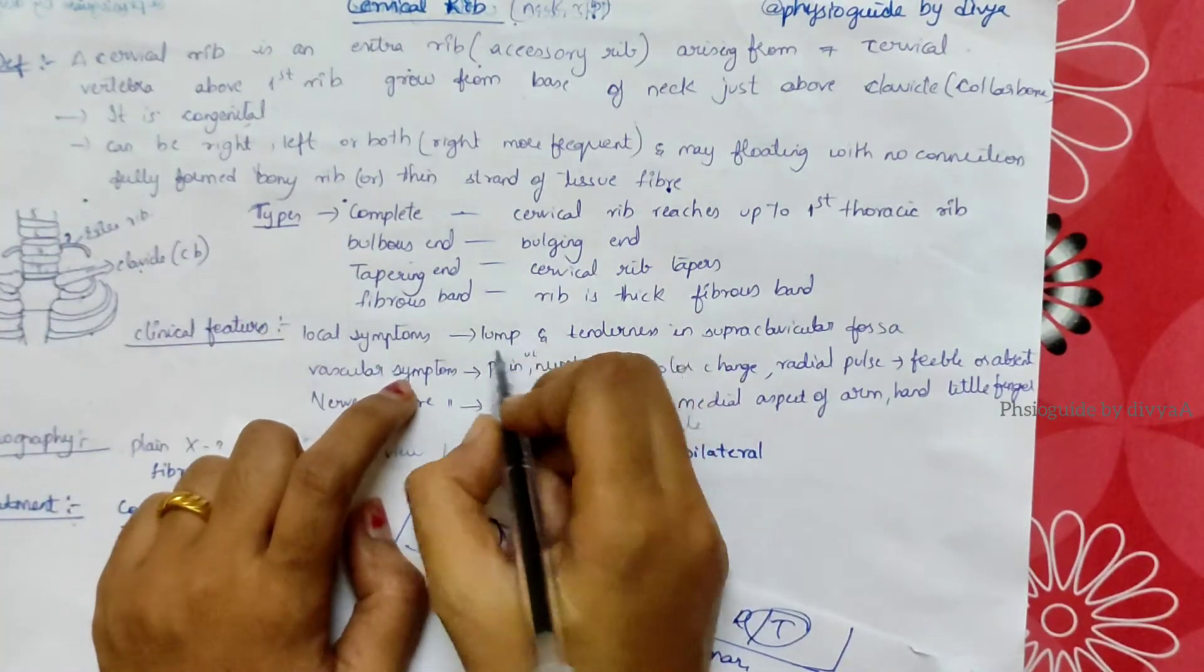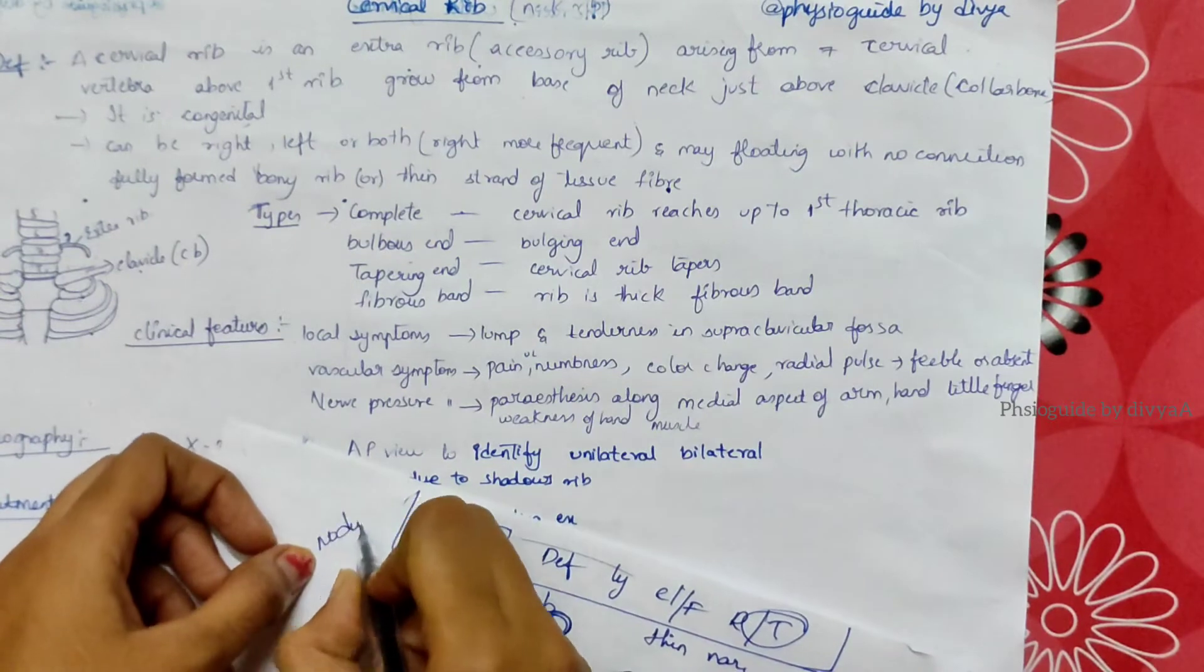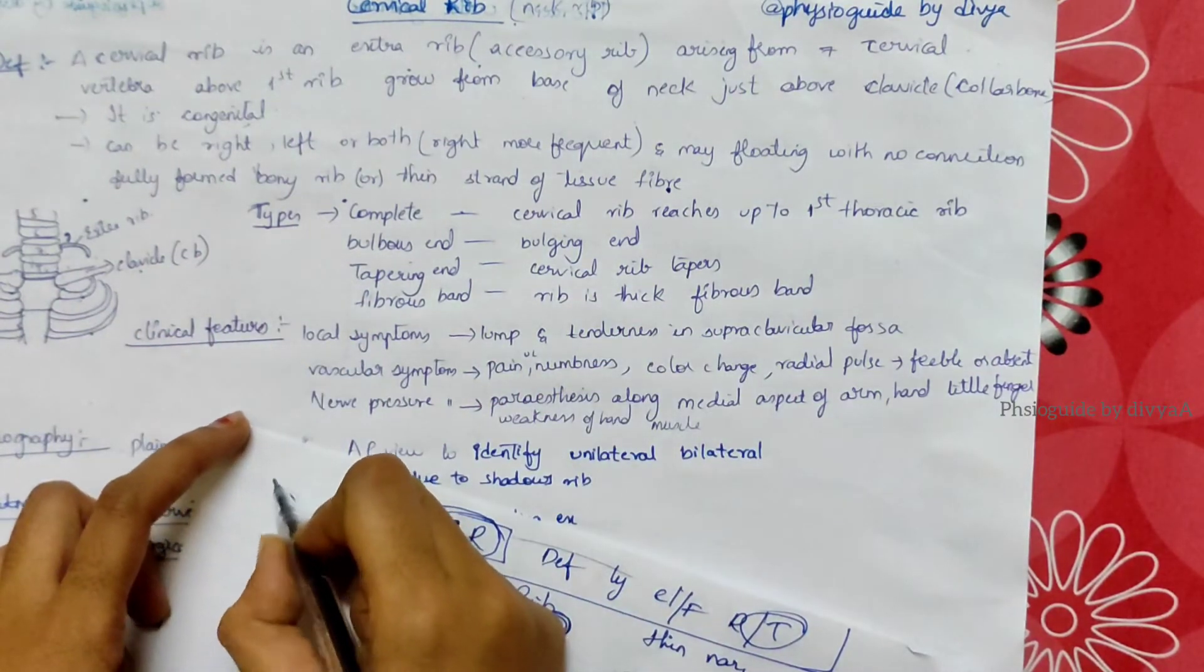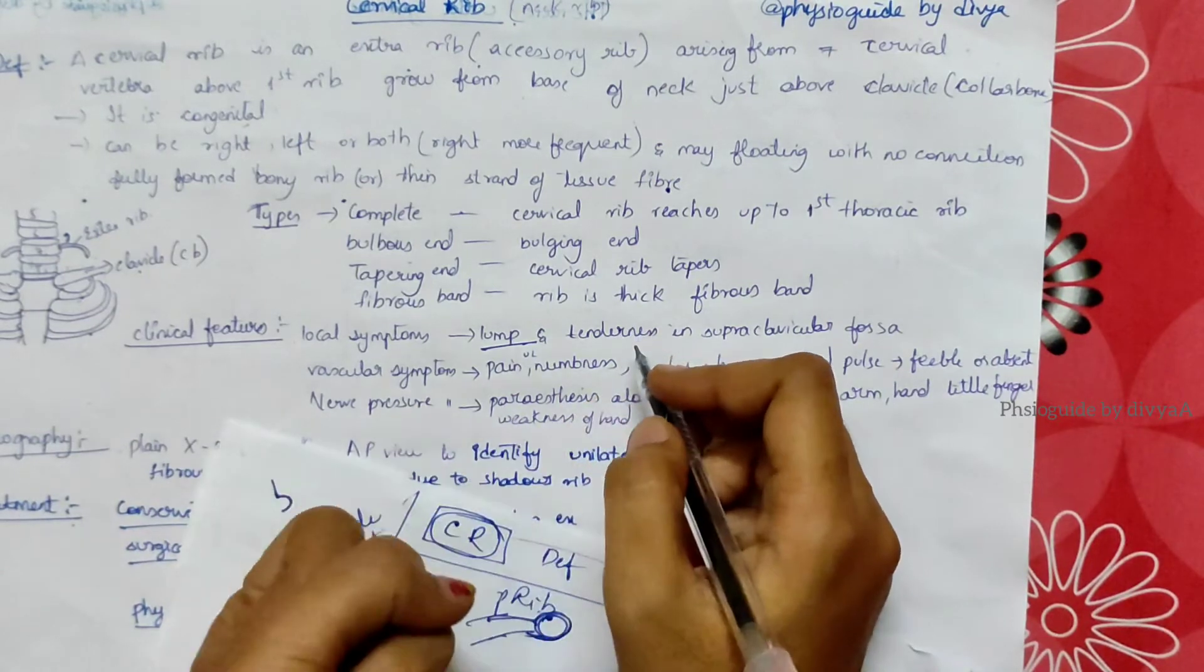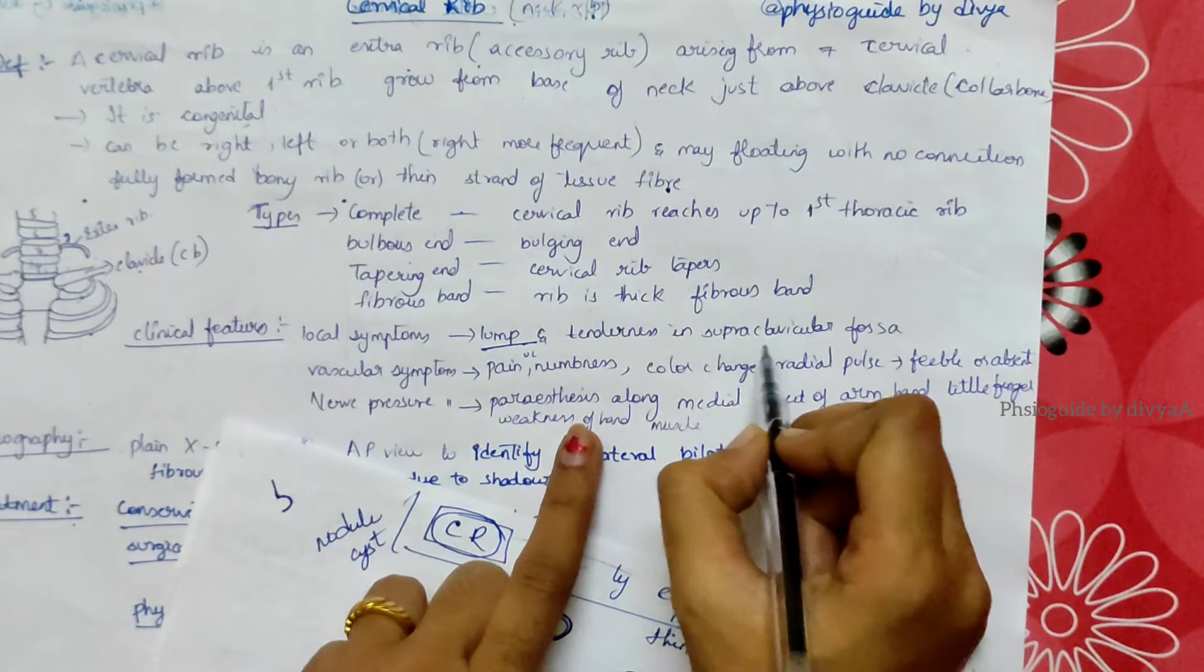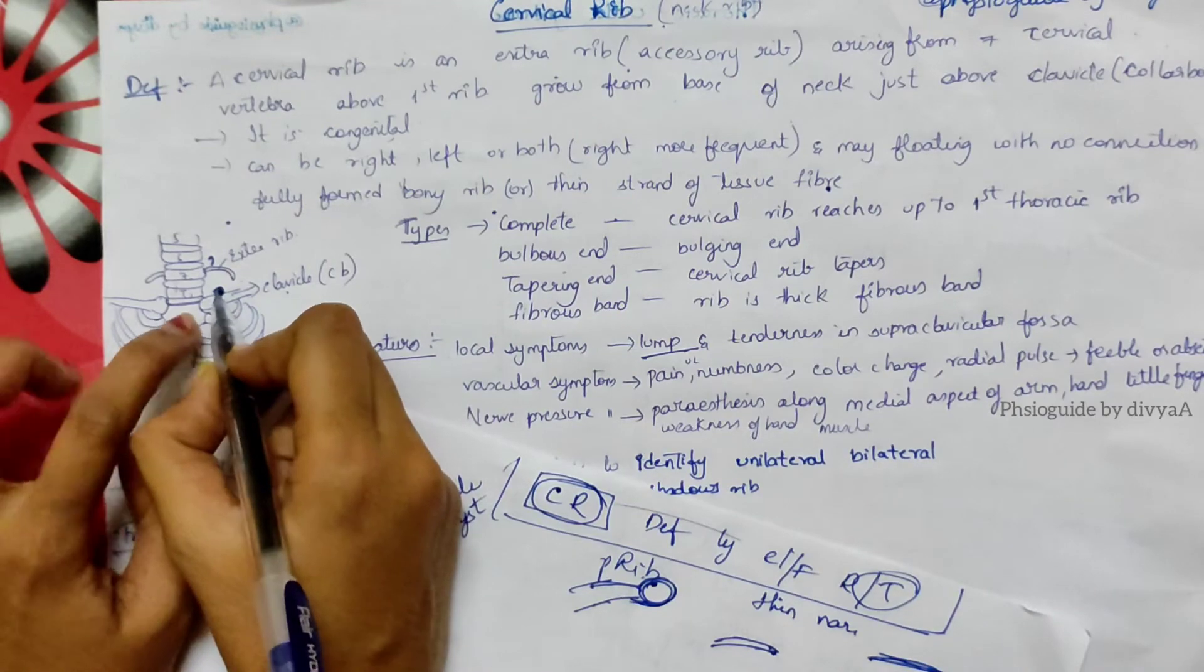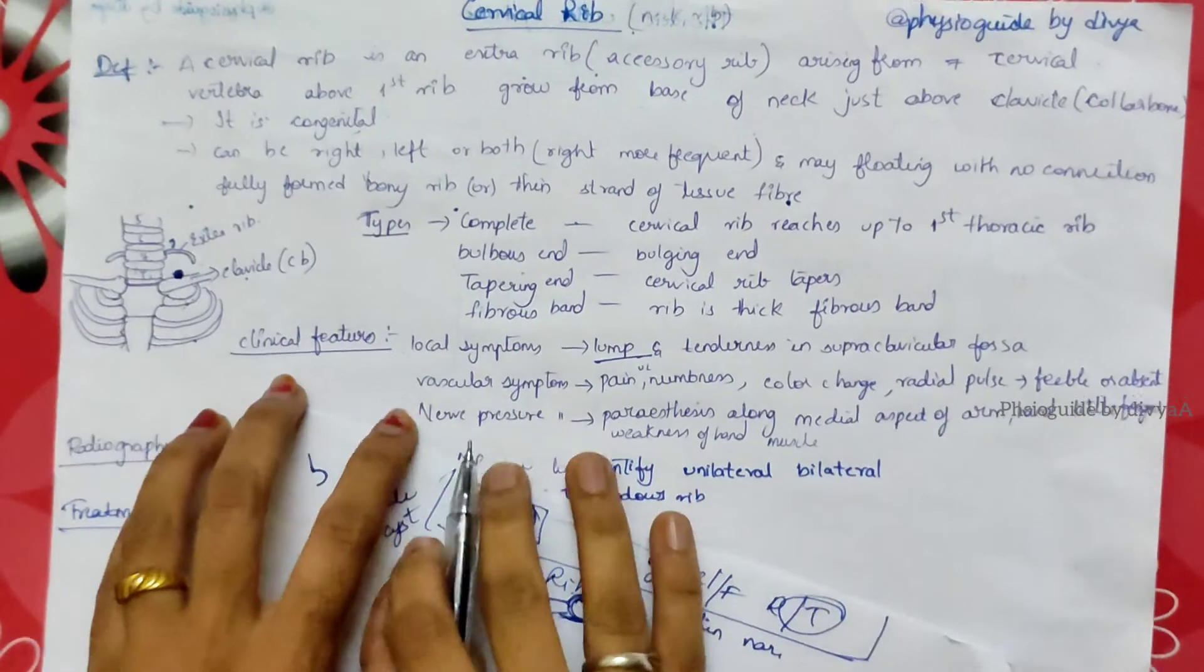What are local symptoms? Lump, meaning like a swelling, nodule, or cyst-like bulge that can be seen outside the skin. And tenderness, meaning pain or discomfort in the supraclavicular fossa. Supra means above the clavicle, so there will be pain and discomfort in this area. These are the local symptoms.